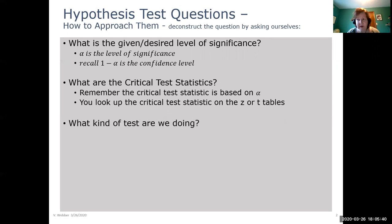We would then need to determine what kind of test are we doing. And we have three types of tests. A less than test. So we'd have one critical test statistic there in the negative area. And keywords would be less than, has decreased or smaller than.